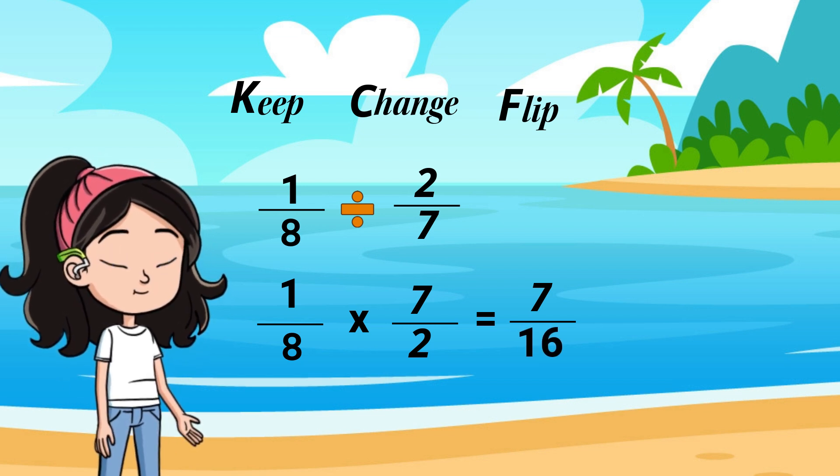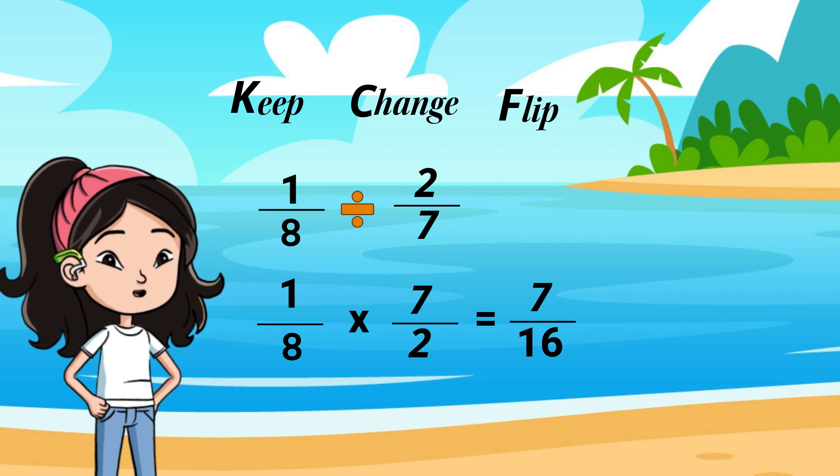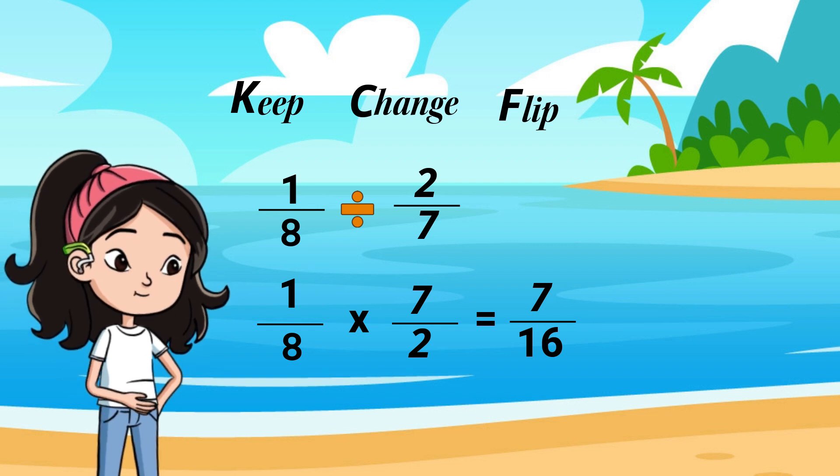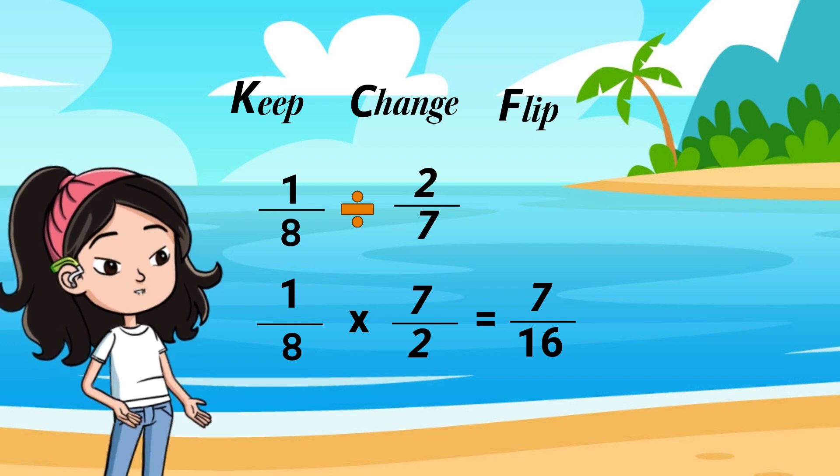3 steps. Keep, change, flip. Keep your first fraction. Change your division to multiplication. Then flip or write the reciprocal of your second fraction.